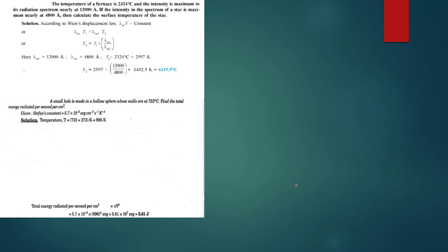We shall see some examples regarding the laws of Stefan-Boltzmann and Wien's displacement law to conclude this part. The temperature of a furnace is 2324 degrees centigrade, and the intensity is maximum in its radiation spectrum at nearly 12,000 angstrom. If the intensity in the spectrum of a star is maximum at nearly 4,800 angstrom, then calculate the surface temperature of the star.